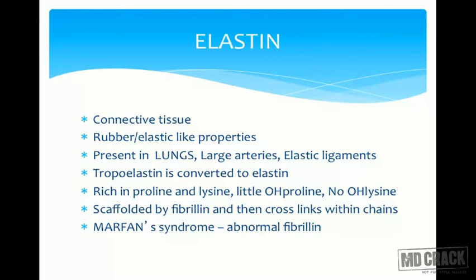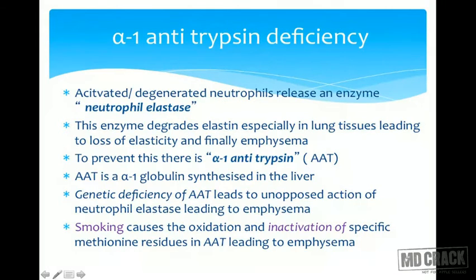Elastin is synthesized as tropoelastin, which is converted to elastin. The difference between collagen and elastin is that although elastin is also rich in proline and lysine, it contains very little hydroxyproline and absolutely no hydroxylysine. Elastin is scaffolded — it does not form a quarter-staggered structure. It is scaffolded by fibrillin and forms cross-links within the chains. An important disease caused by a problem with elastin is Marfan syndrome, involving abnormal fibrillin.